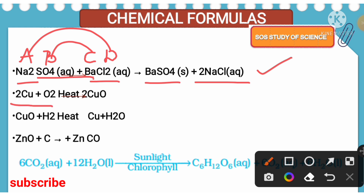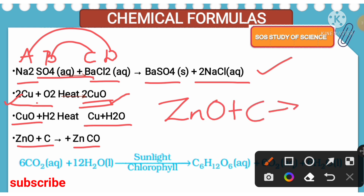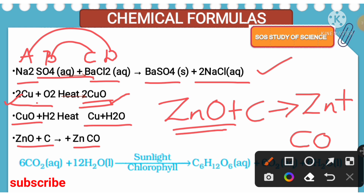Copper, when it is heated in the presence of oxygen, we get copper oxide. Copper is generally brownish in color; when we heat it, the brown color copper will turn into black color. Now on addition of hydrogen to the copper oxide, we get copper back along with the formation of water. Next, zinc oxide when it is combining with carbon, we get zinc and carbon monoxide. Here this is an example for a redox reaction: zinc oxide is losing oxygen so it is reduced to zinc, and carbon is gaining oxygen so it is oxidized. Both reduction and oxidation take place simultaneously, so we call it a redox reaction.